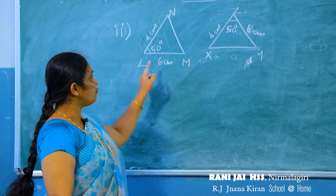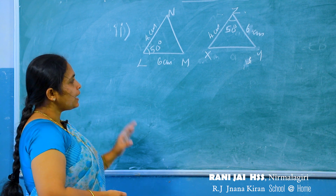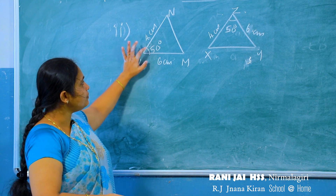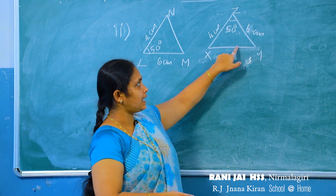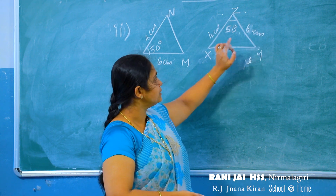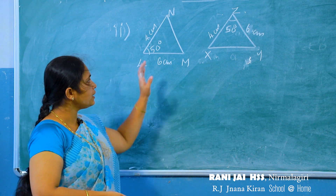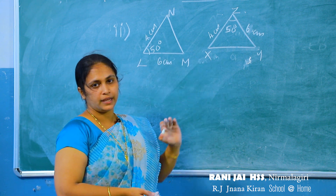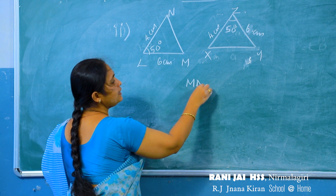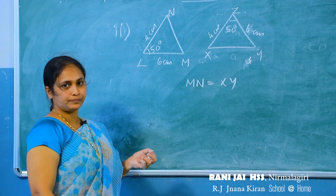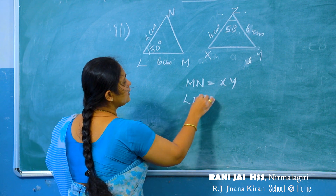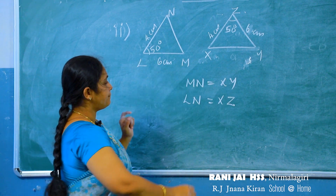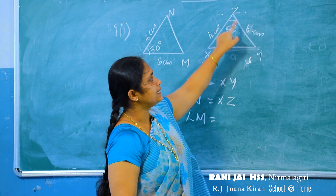In the next question, find all pairs of matching angles. In triangle LMN, two sides are 4 centimeter and 6 centimeter, and the angle between them is 50 degrees. In the other triangle, two sides are also 4 centimeter with an angle between them of 50 degrees. Therefore these two triangles are equal, so the third sides are also equal: MN equals XY, LN equals XZ, and LN equals ZY.